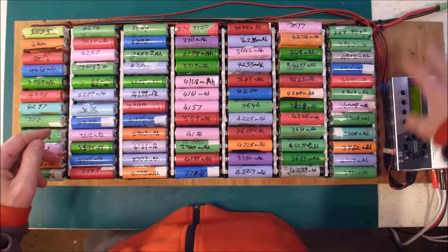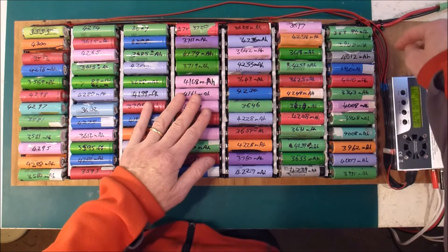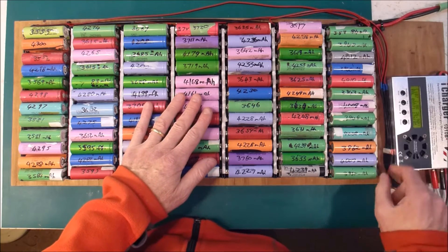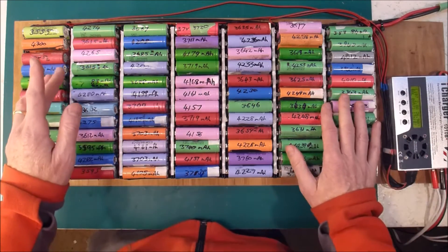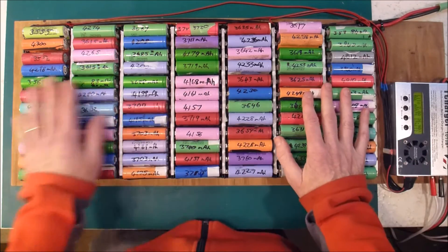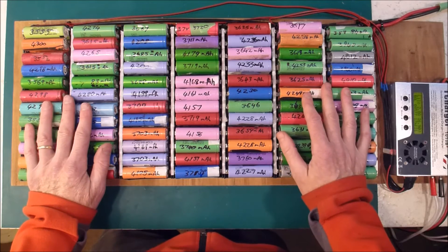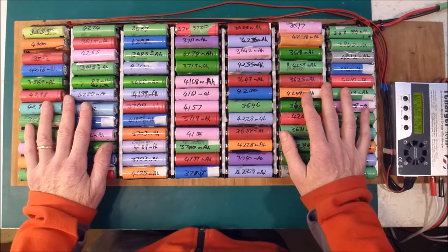I'm going to, once I've balance charged it, I'll connect it up to the solar system, put a cell logger on the balance leads. I'm going to try doing without a BMS for a while and just monitor it closely and see how it goes, just to see if I can actually do without a BMS.